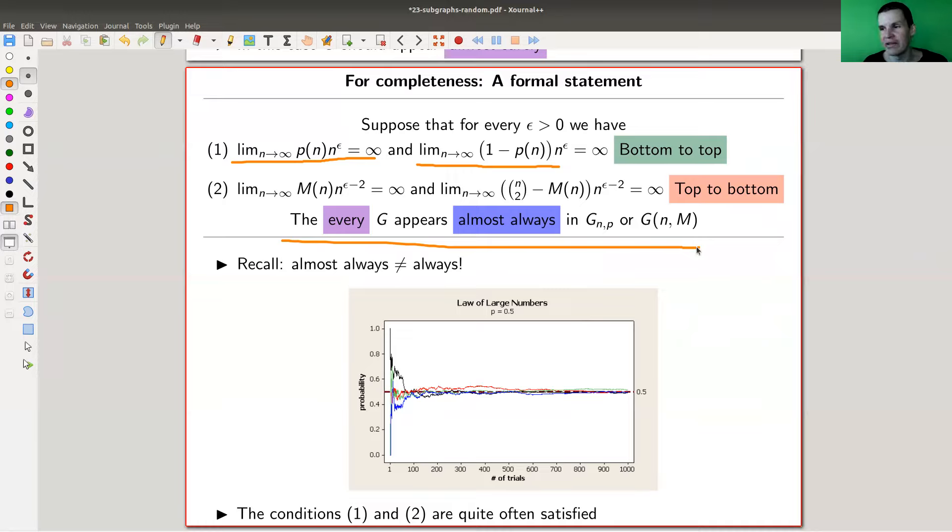There's a dual statement which looks exactly the same, so I'm not going too much into details, but it works independent of the random model. And the whole point here is that we kind of give up on having an always statement, and we are happy with an almost always statement.